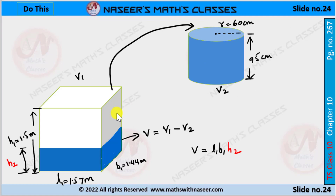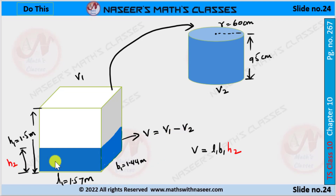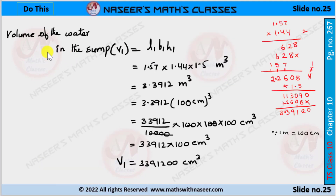After filling the overhead tank with water from the sump, there is some water left in the sump. So its volume V = V1 − V2. The height of the water remaining in the sump is called H2. We have to find H2, and V = L1 × B1 × H2.